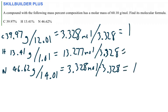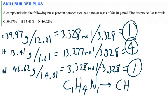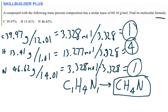Dividing gives 1 for carbon, 3.99 — which we call 4 — for hydrogen, and 1 for nitrogen. I already have whole numbers, so no additional adjustment step is needed. The empirical formula is CH4N; remember, we don't write the ones. Step one is done. Now that I have the empirical formula, let's use it to find the molecular formula. Notice they also gave us the molar mass, which is important.